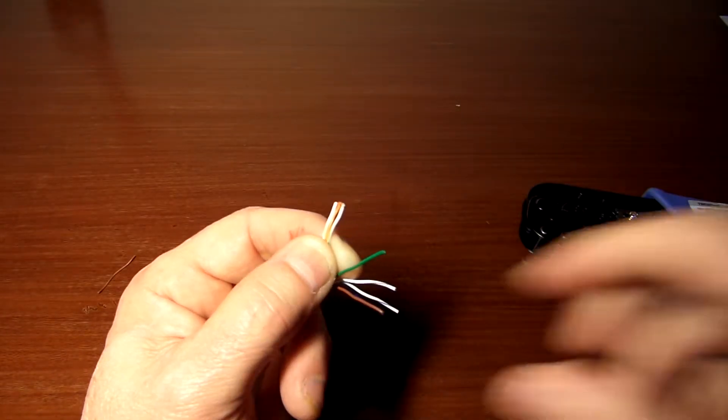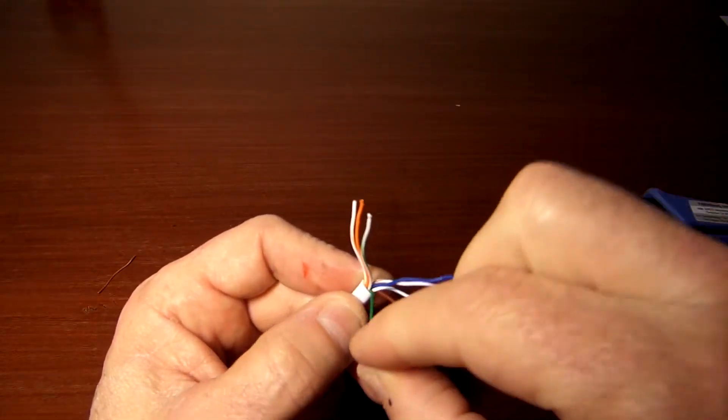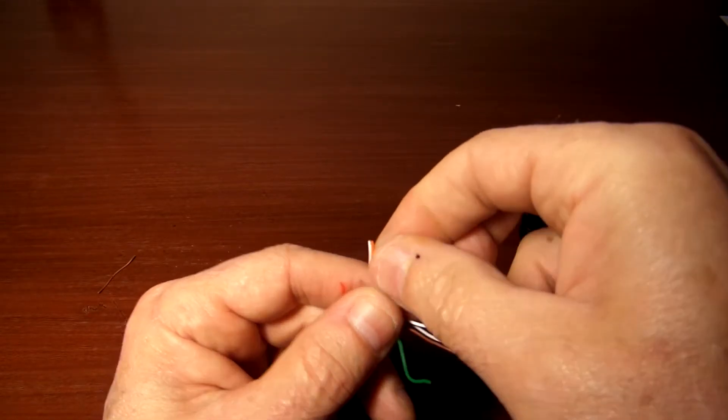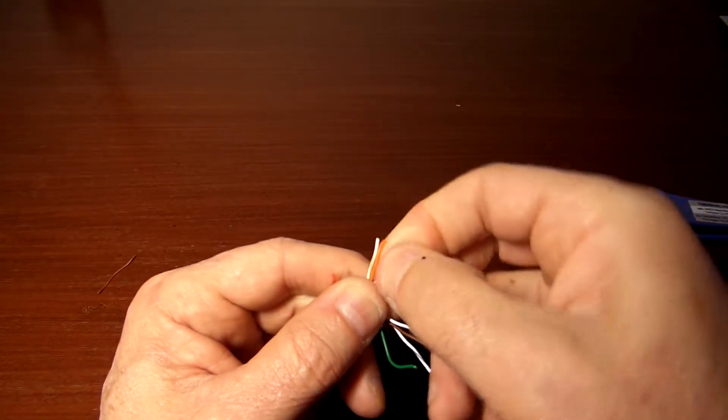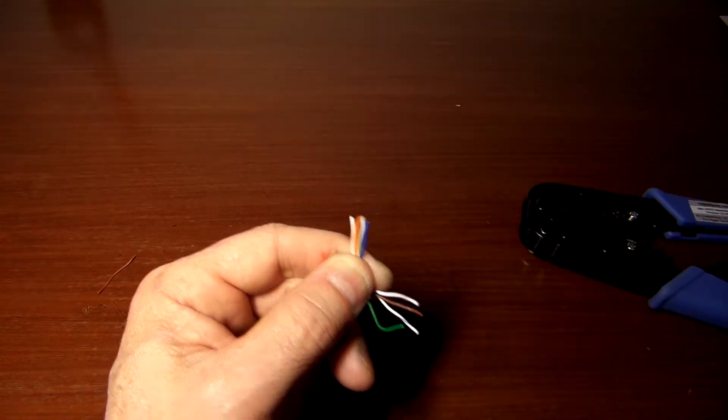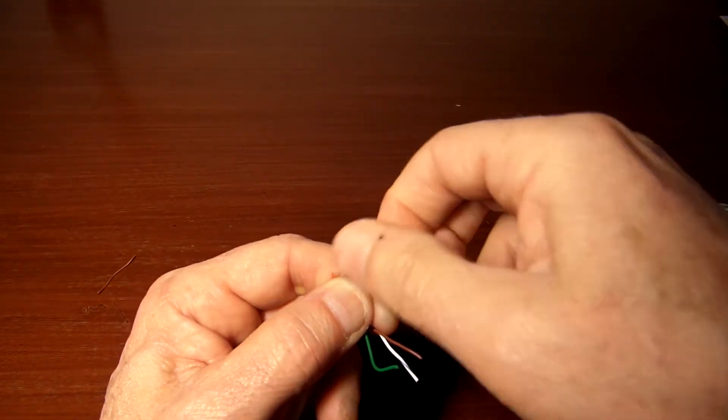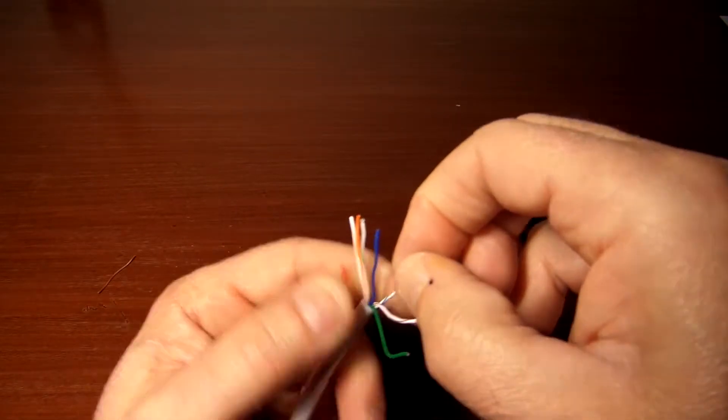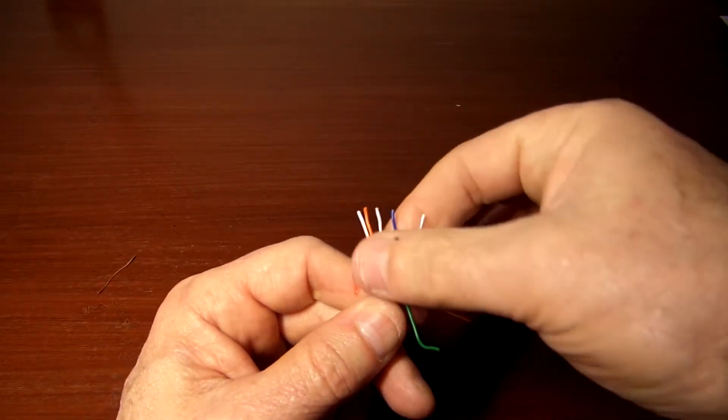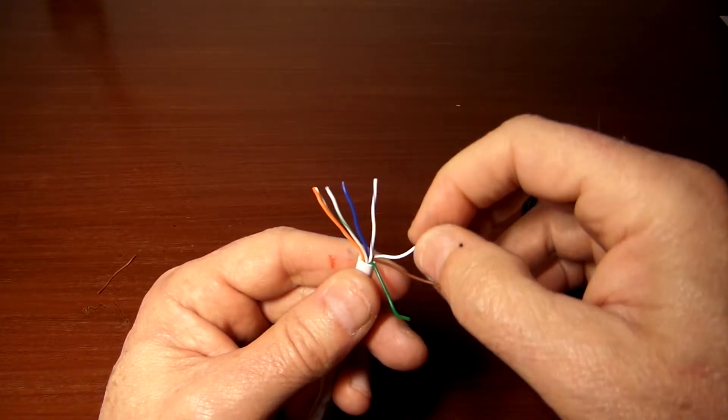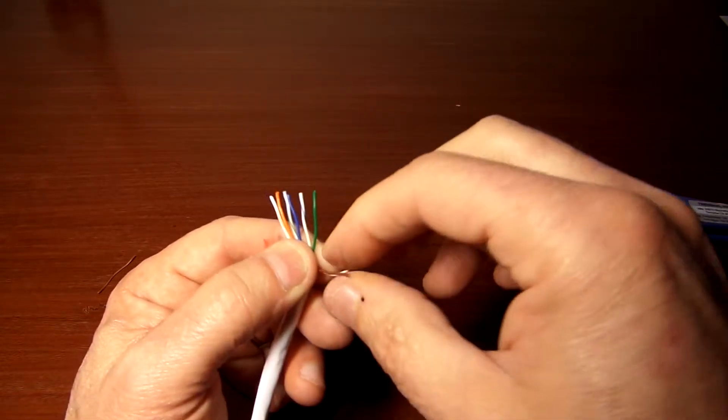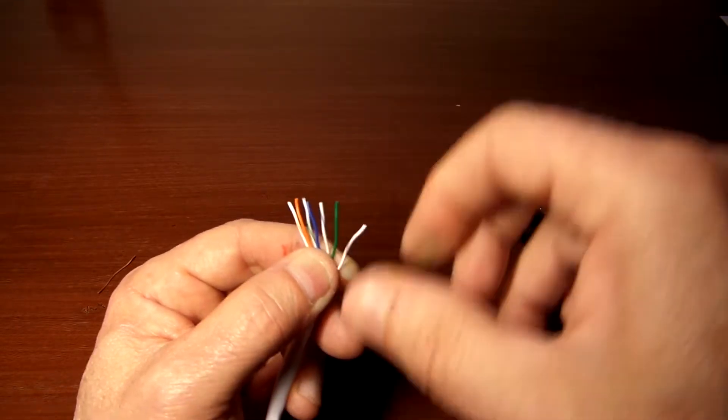After the green and white, you want the solid blue next. So we got the solid blue next to them. After the solid blue, then we want the blue and white. And then after the blue and white, we want the solid green. And then after the solid green, we want the brown and white, and then finally the brown. So there's your sequence.